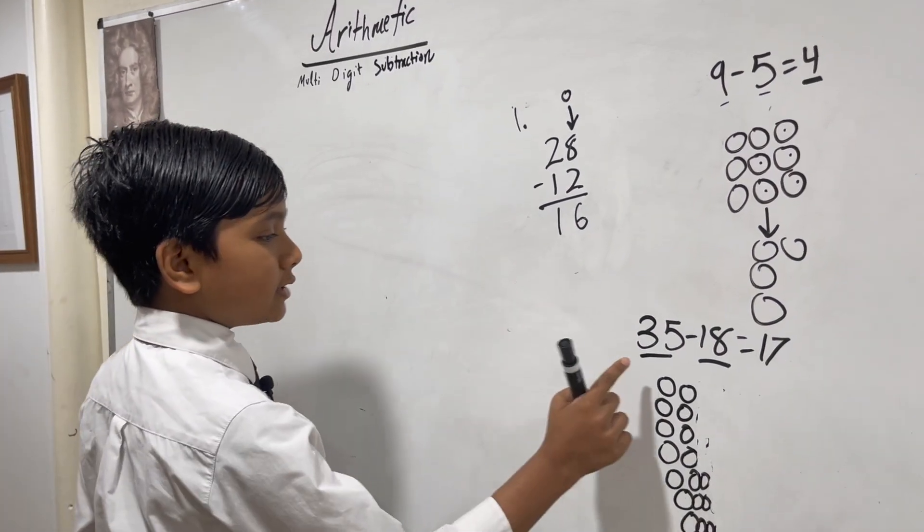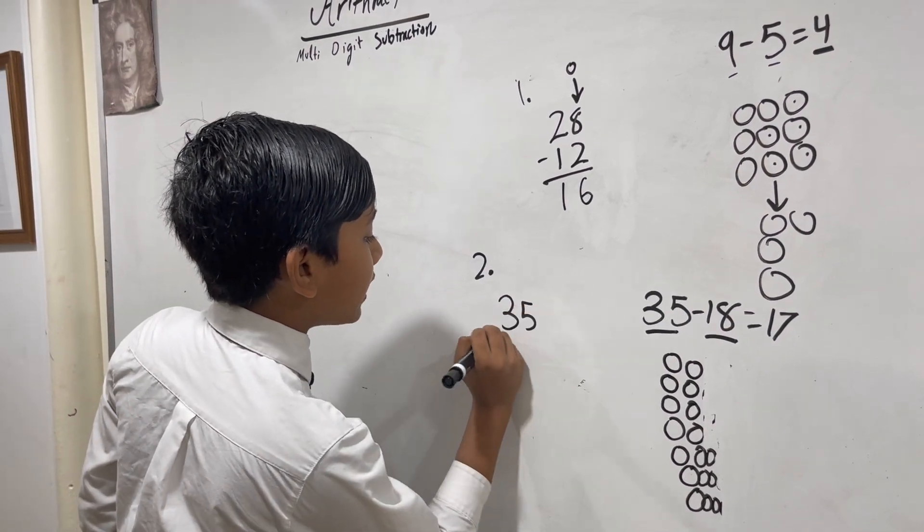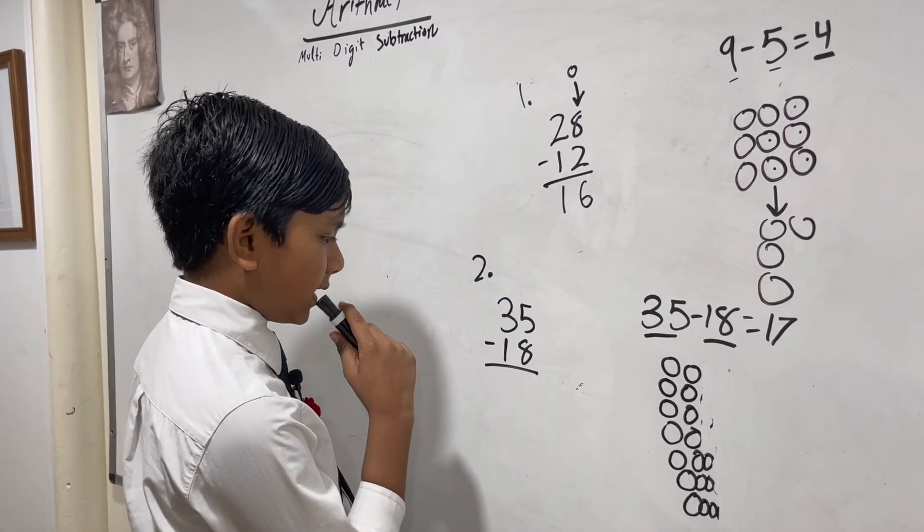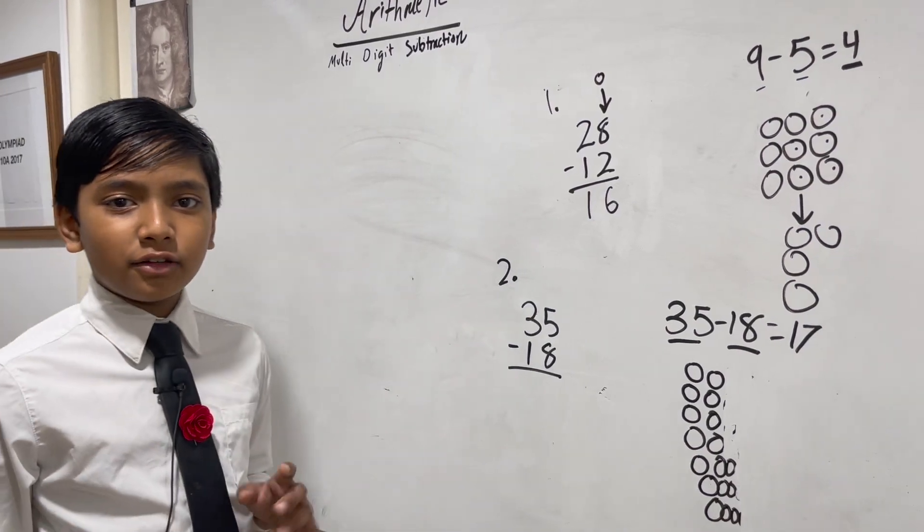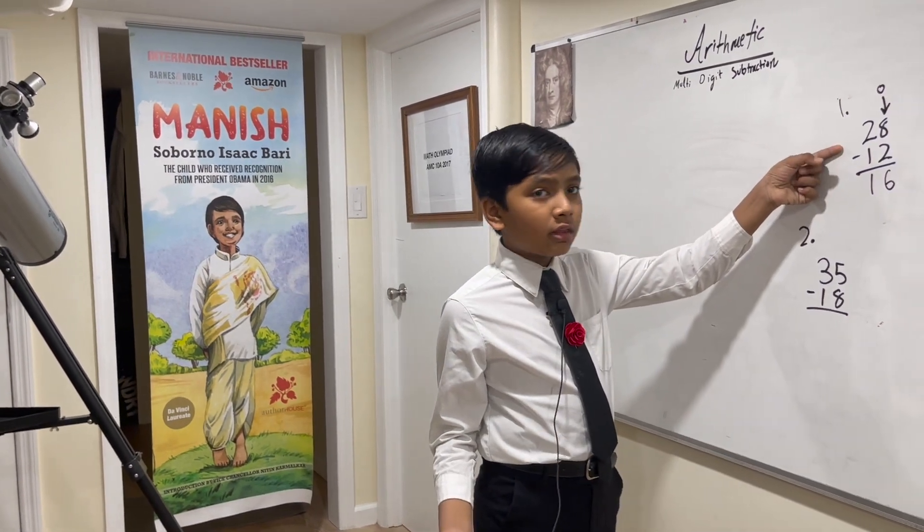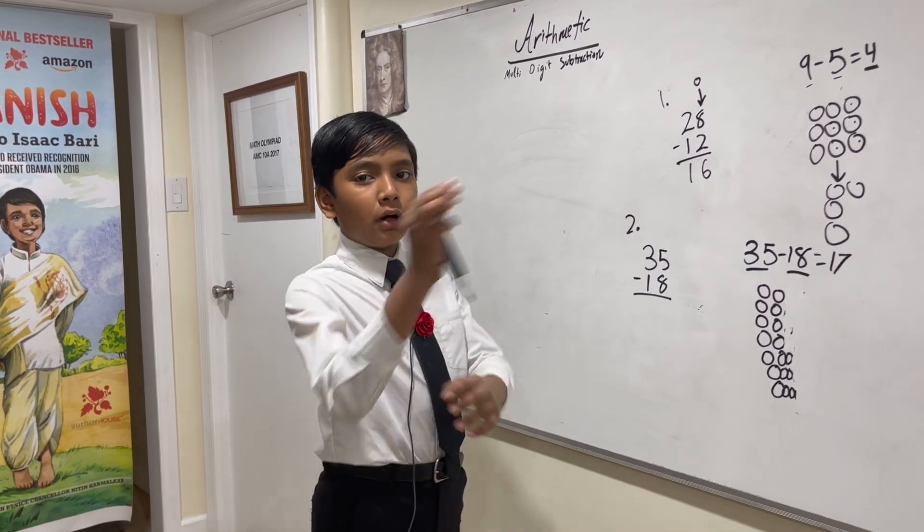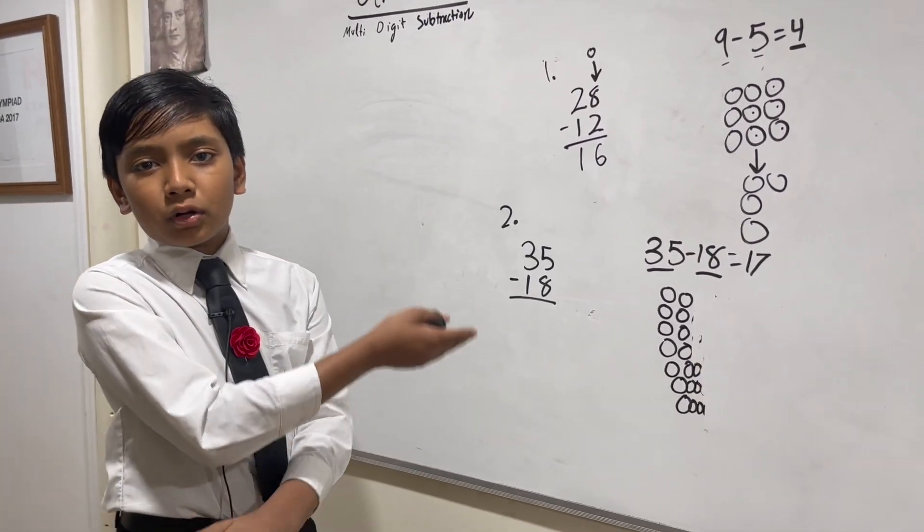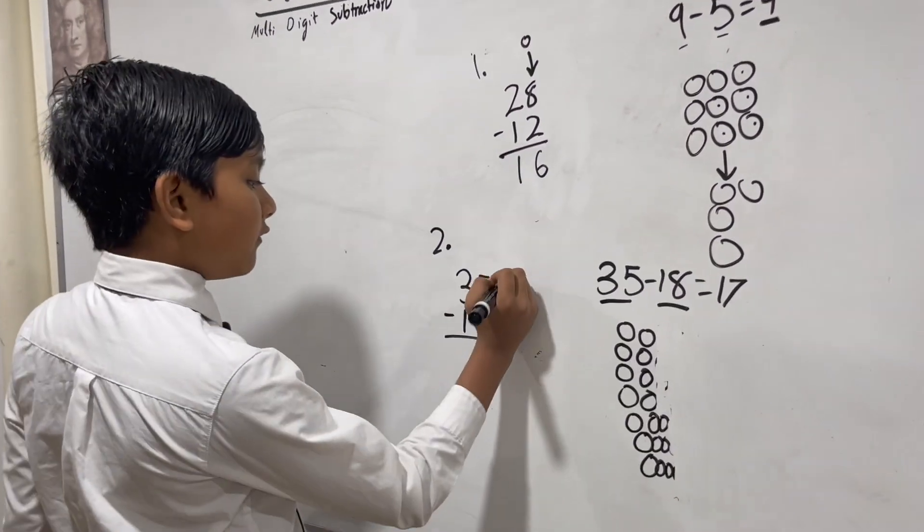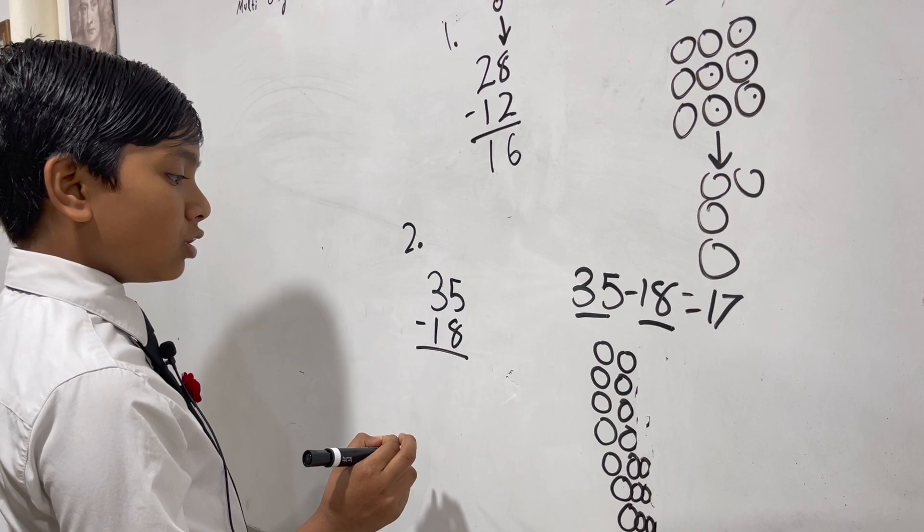All right, now let's try this example, but it gets a little more tricky: 35 minus 18. First of all, we have 5 minus 8. Wait a second. First I'm just going to tell you this big little rule: you always gotta stack the bigger number on top of the smaller number when it comes to subtraction, because if you put the smaller number first and then the bigger number, you're going to get a negative result.